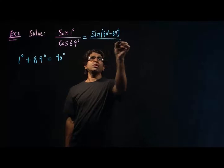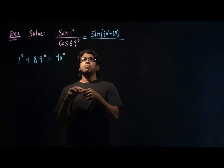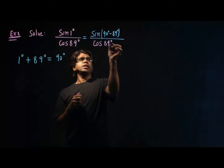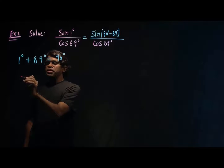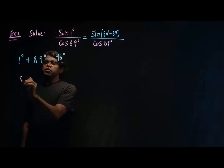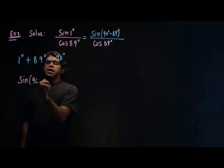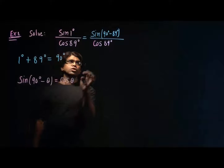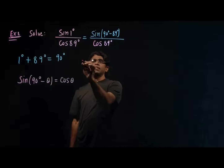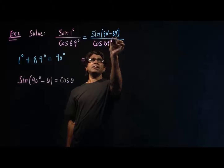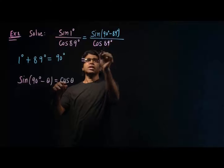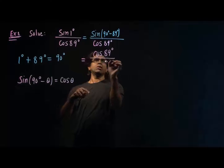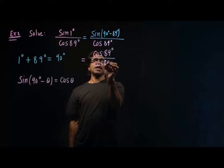So my numerator is sine of 90 degrees minus 89 degrees, over my denominator cosine 89 degrees. Now let me remind you the complementary formula for sine: sine of 90 degrees minus theta equals cosine theta. Following that formula, sine of 90 minus theta becomes cosine theta, so I write cosine 89 degrees.